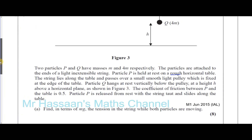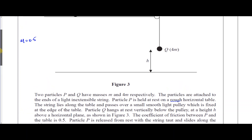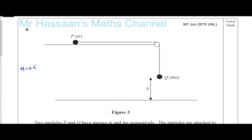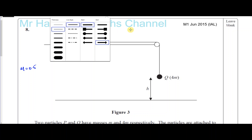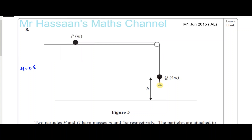Find in terms of Mg the tension in the string when both particles are moving. So let's put some of the forces involved on this diagram. We have the weight of Q and the weight of P. We also have the reaction force of P, which will be important because of friction. And of course the frictional force acts opposing the motion, and there's the tension in the string.